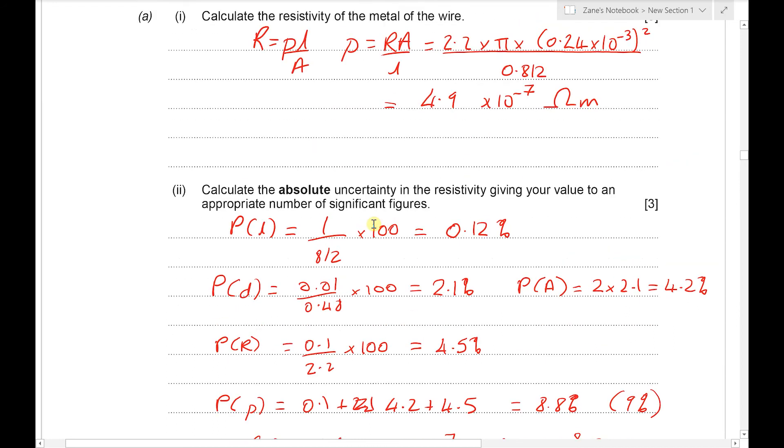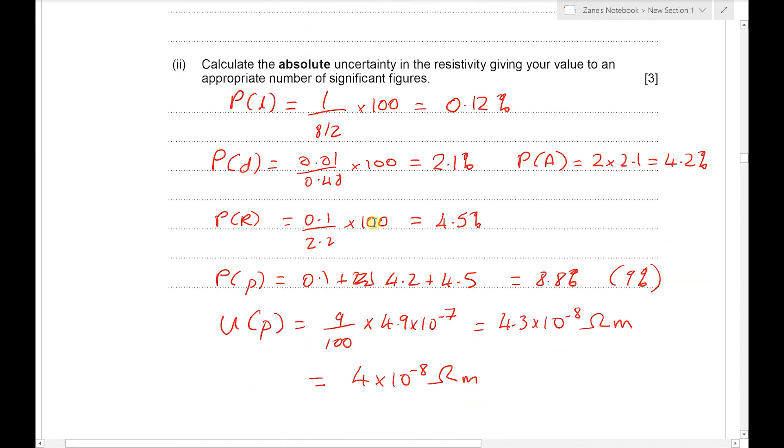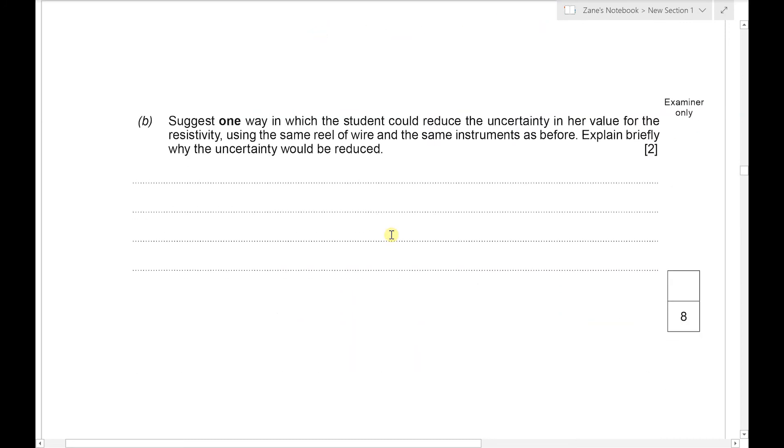Now, to reduce that percentage uncertainty, the absolute uncertainty, the resolution of the measurement instrument is going to be stuck at 0.1. So we need to increase the resistance. And we can do that by increasing the length. So what we're going to use here is use a longer piece of wire.